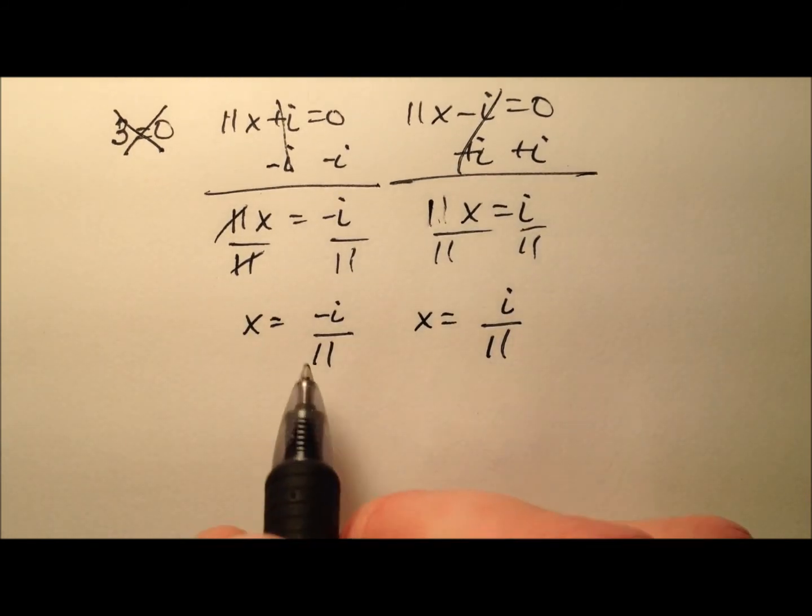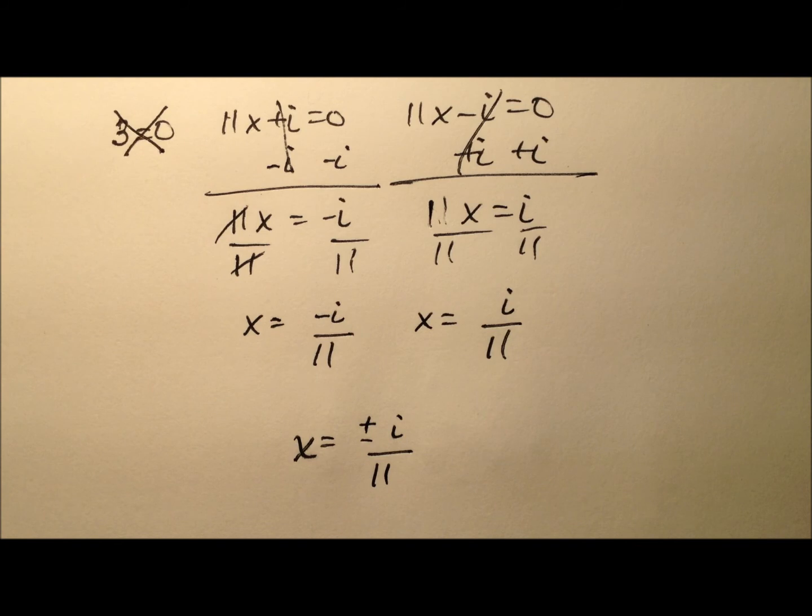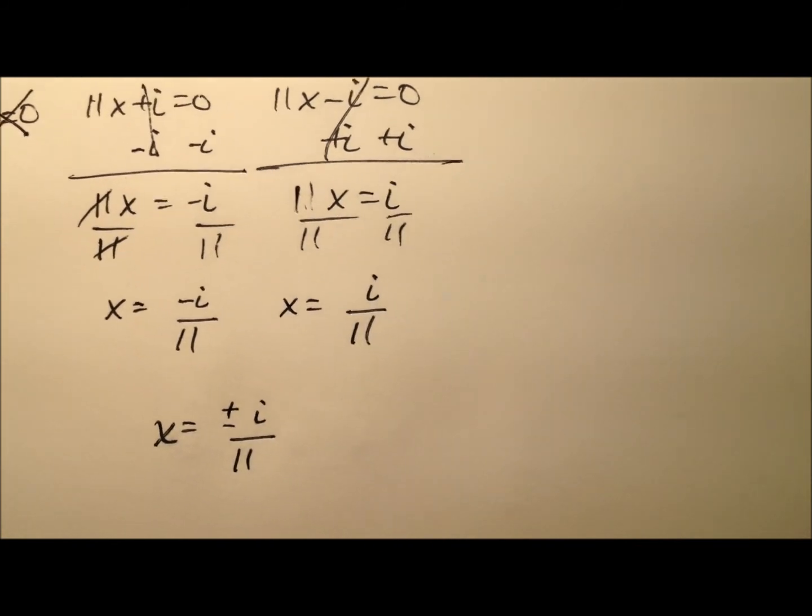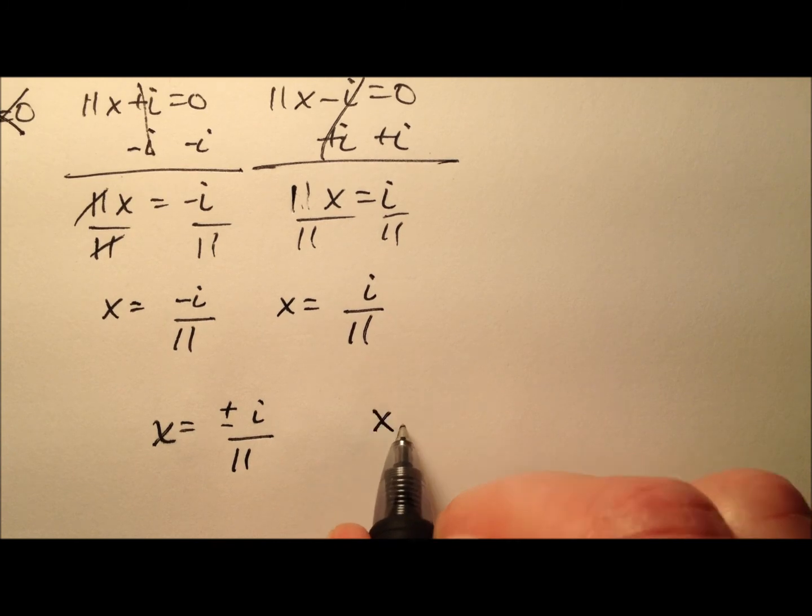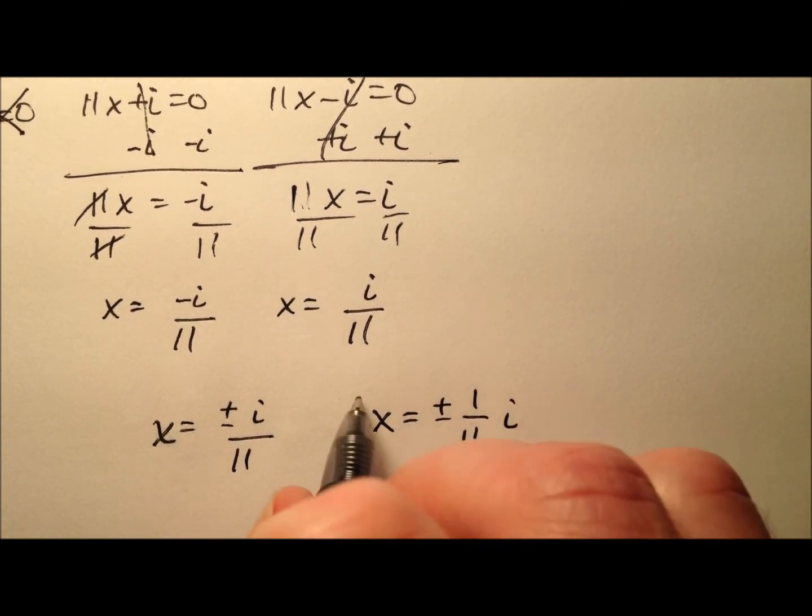And I could write that solution now in x equals plus or minus i over 11, but I want to write this in a plus bi form, so the i needs to come afterwards. So I'm going to rewrite this as x equals plus or minus 1 11th i, and that will be the solution for this initial equation.